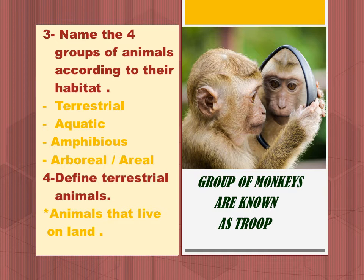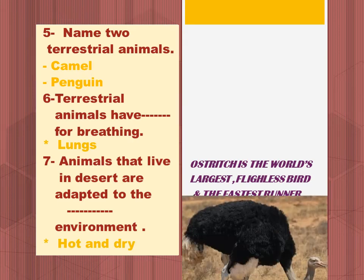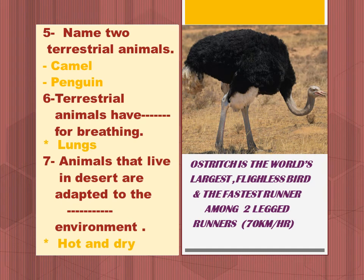Terrestrial animals are animals that live on land. Name two terrestrial animals: cows. Terrestrial animals have lungs for breathing.